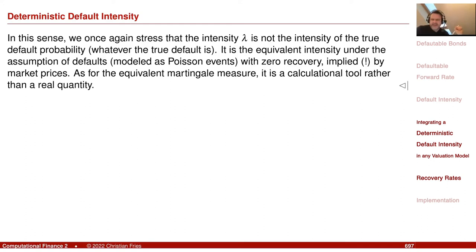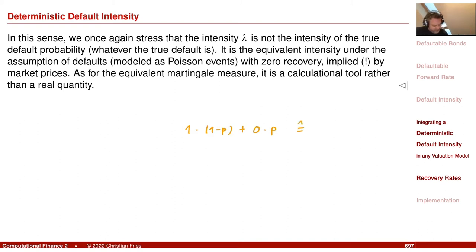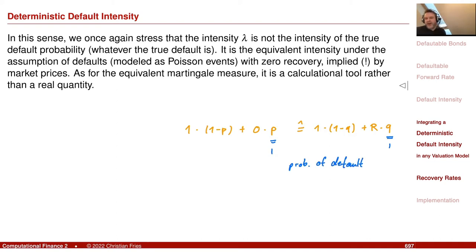If you do not model recovery and assume you get back zero, you put all the information about residual payment into the probability. Getting some recovery with probability q in case of default corresponds to getting zero with a different probability p that balances the difference. You can convert between models with and without recovery by solving the equation relating p and q given the recovery rate r.